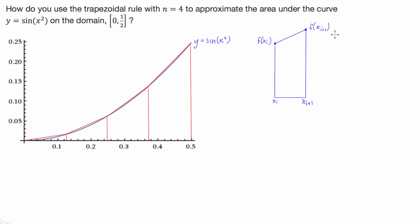We've been given this question where we're asked to use the trapezoidal rule to approximate the area under the curve y equals sine squared x on the domain 0 to 1/2. The first thing we can do to make it easier to understand is actually derive the trapezoidal rule for n equals 4, and then we'll apply that to y equals sine of x squared.